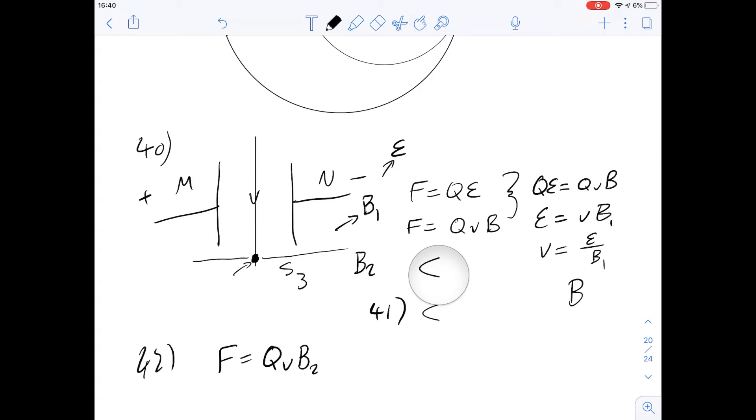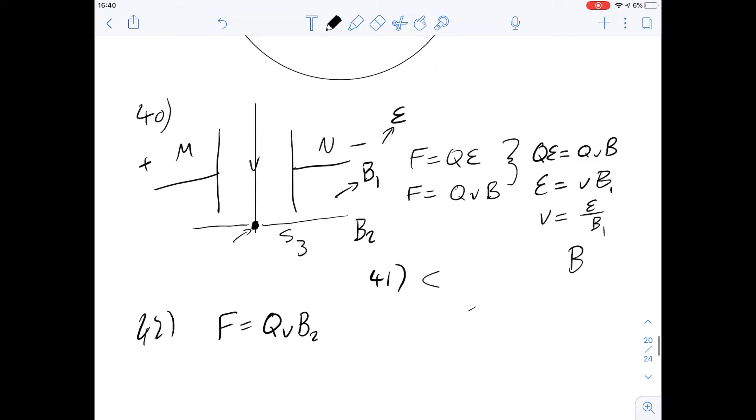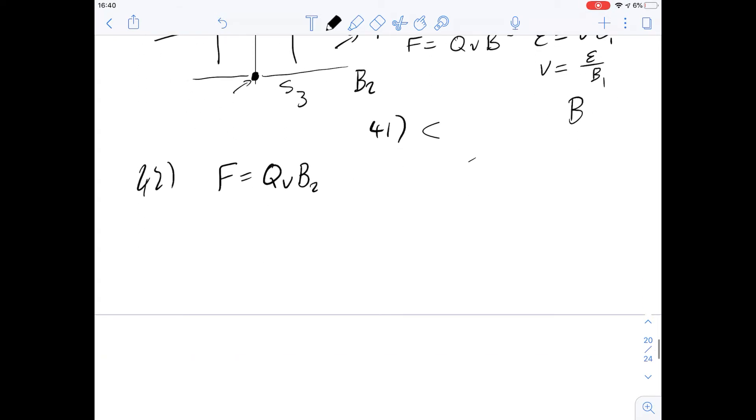42 says the speed of an ion of mass m just before it strikes the photographic plate is given by what? So I've written down the equation here that I think is most useful, and of course we're dealing with B2 here, so we've passed S3 and so B2 is the magnetic field that we're going to be considering in this one instead of B1.